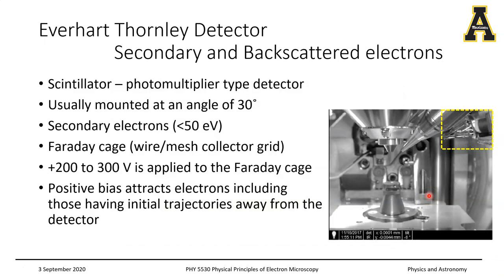One of the most popular detectors is the Everhart-Thornley detector, which is capable of detecting both secondary and backscattered electrons. Let's take a look at where it is positioned inside the electron chamber. You have your lens here, the area where you place the specimen, and the Everhart-Thornley detector marked in yellow. Take note of the metallic cage-like feature on the tip of the detector — this is very important for enabling the collection of low energy secondary electrons. I'll refer to this as the ET detector.